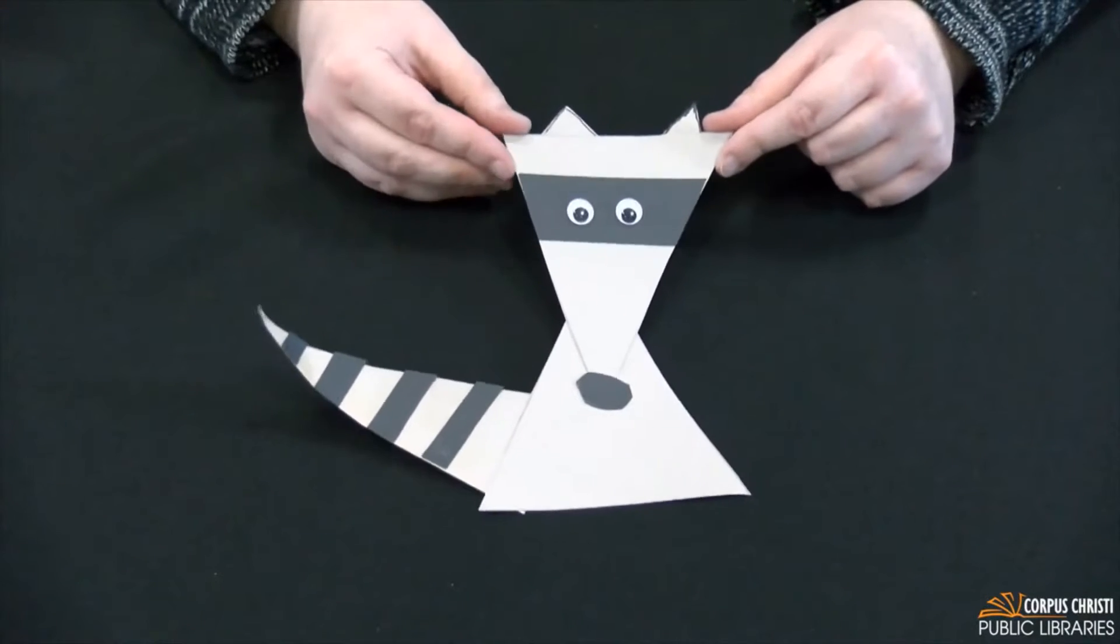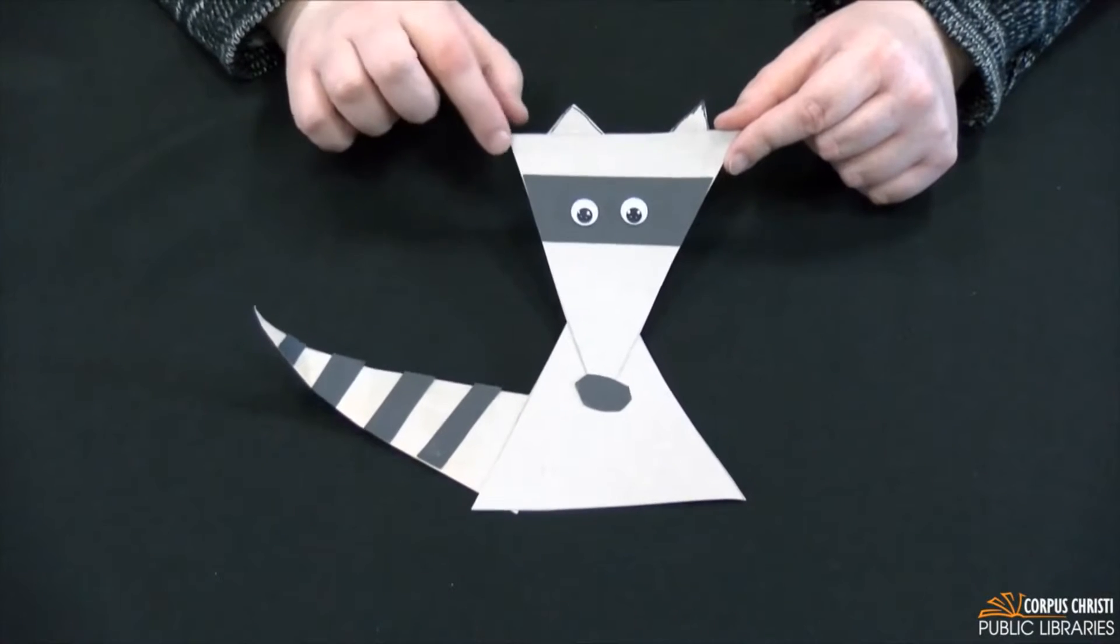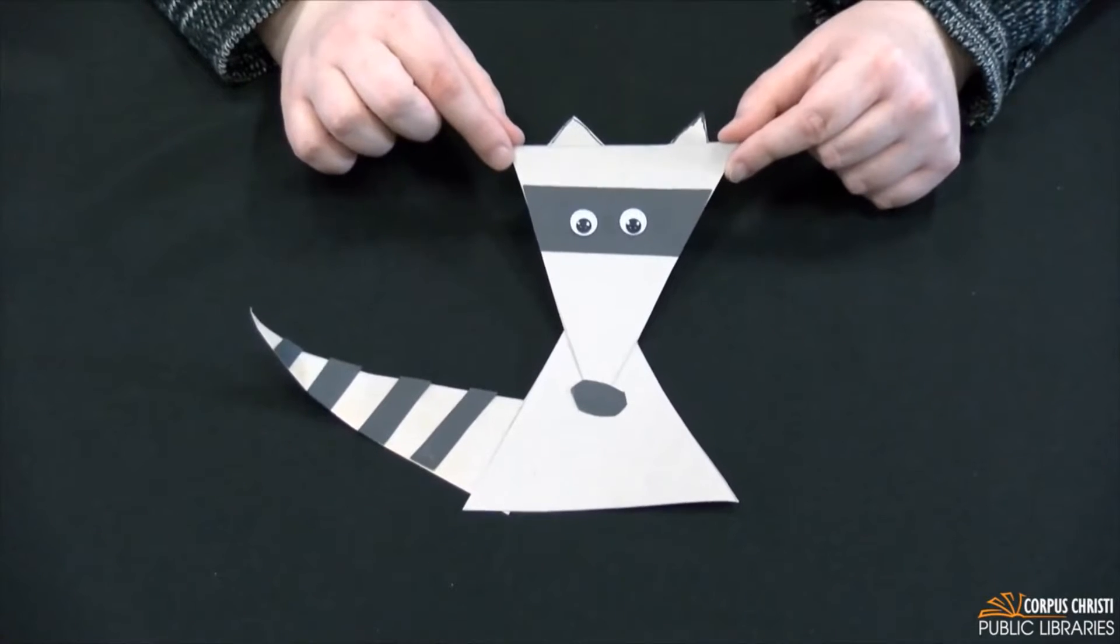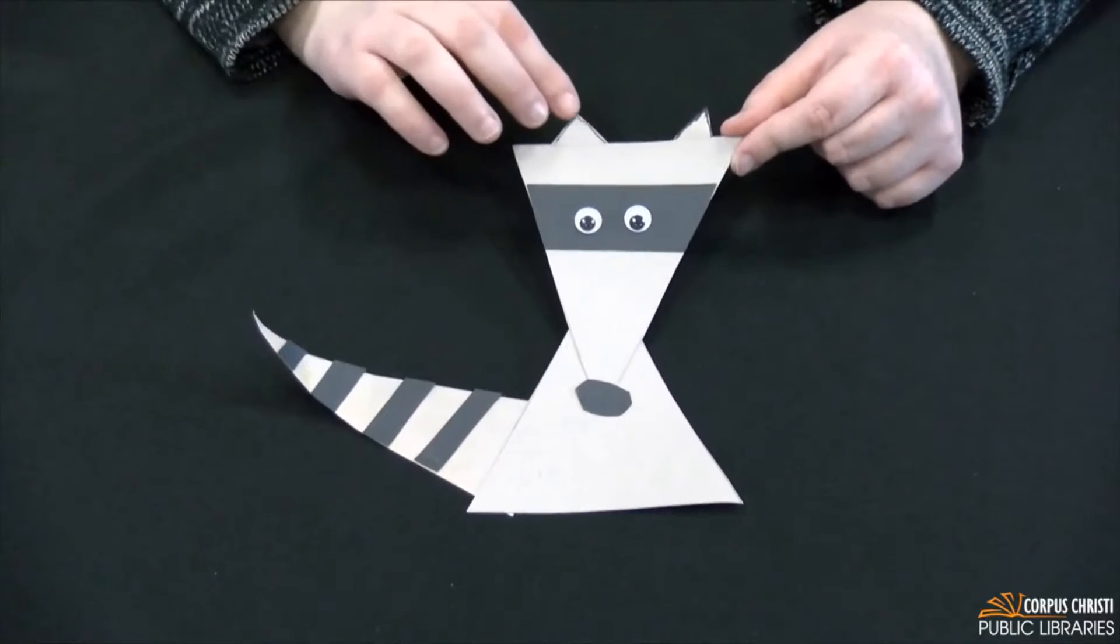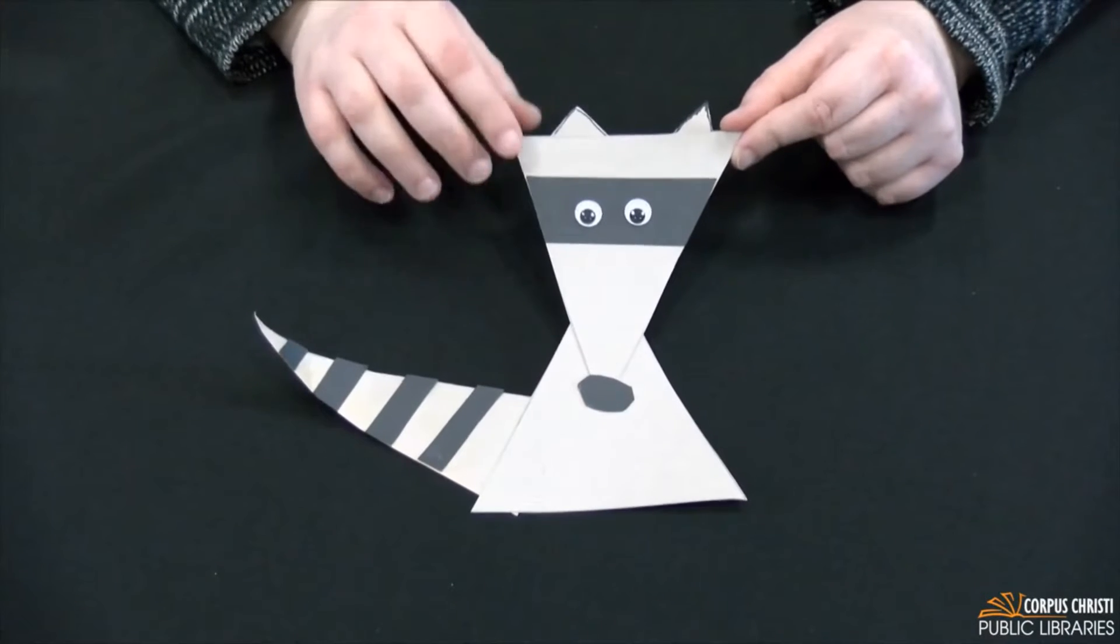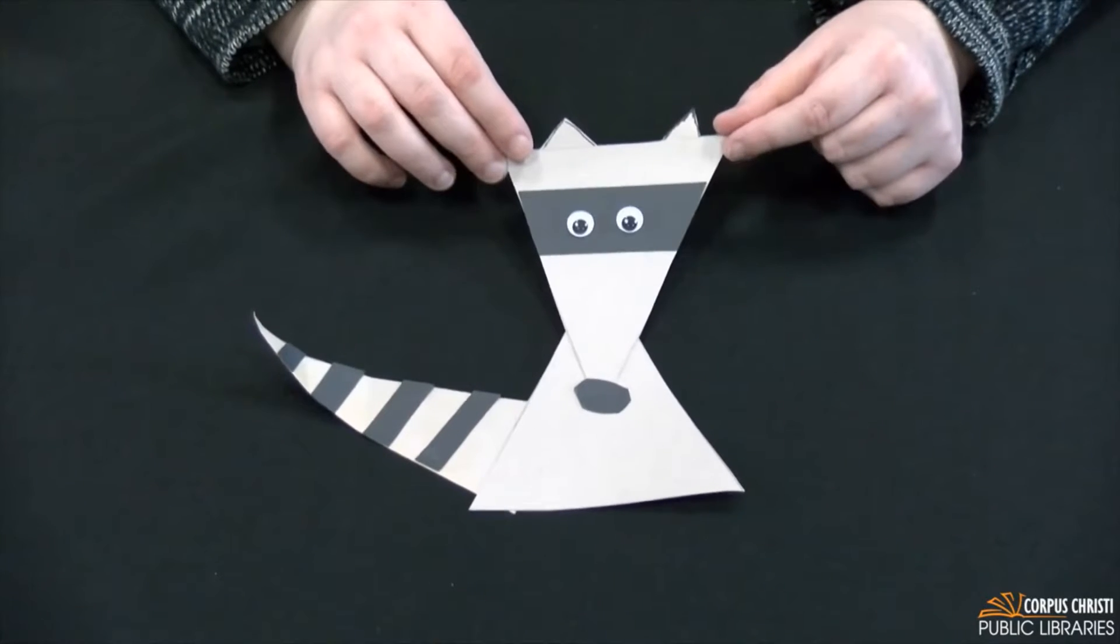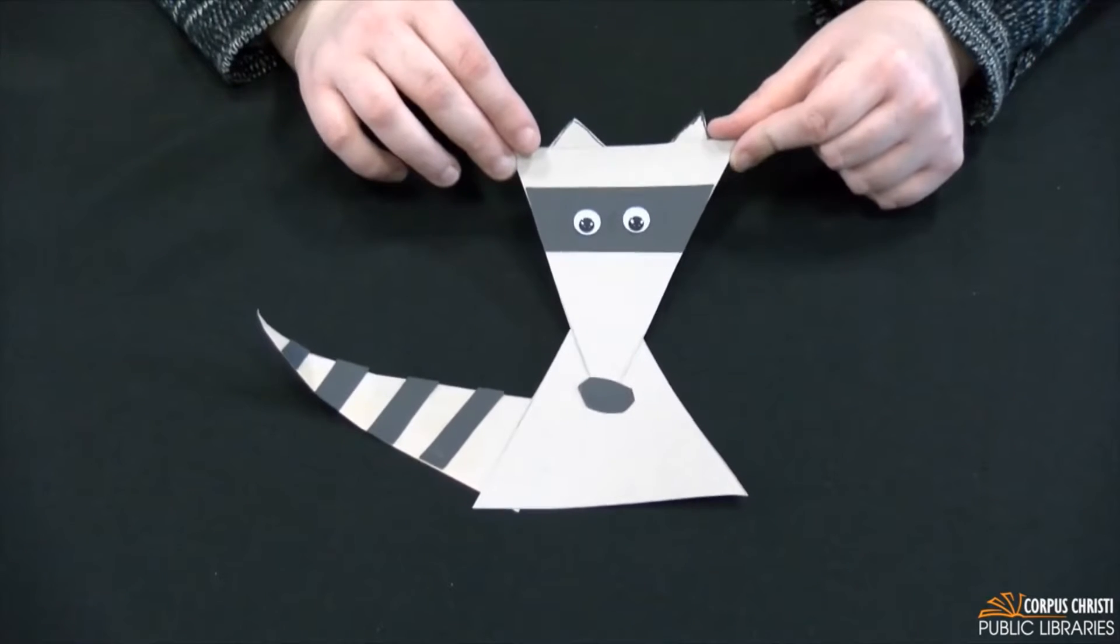So what you'll need for this craft is some sort of brown, tan, or gray construction paper. I will be using gray. Some black construction paper. For the gray paper you'll probably need a whole sheet. For the black paper you can use some scrap paper, scissors, a pencil or something to mark out your shapes on, and you may want a ruler.